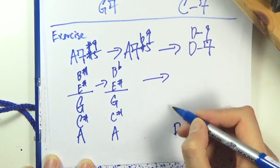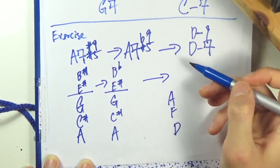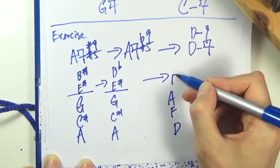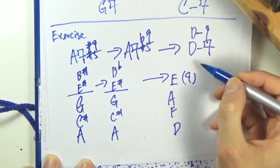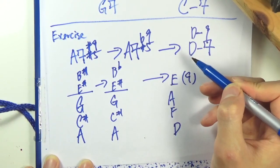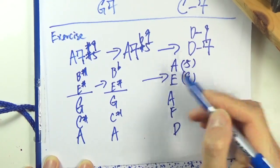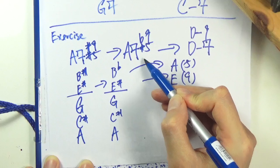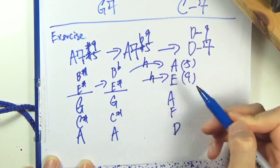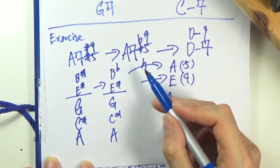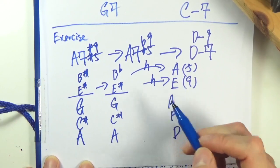Going to D minor - D, F, A. The sharp 5 would become the ninth of the one chord. B flat would usually resolve to the fifth, so A. B flat to A - very nice half step movement here, half step movement here. If you see these half steps, you're probably doing the right thing.